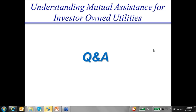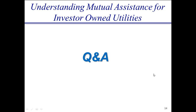Q&A: Cal UMA has developed a resource typing document for equipment similar to FEMA's resource types. Does EEI have such a document? Has anyone attempted resourcing team types based on capability? At this time, there has been discussion, and we're looking at different potentials, but right now there is no resource typing across the industry for crew or equipment typing. It has been discussed, but nothing concrete has resulted.